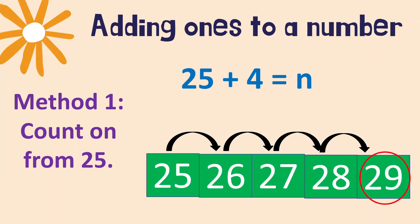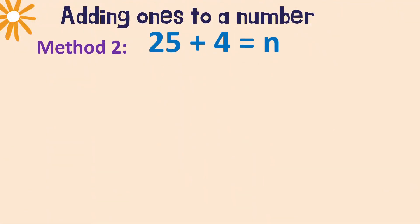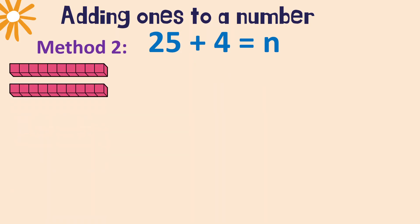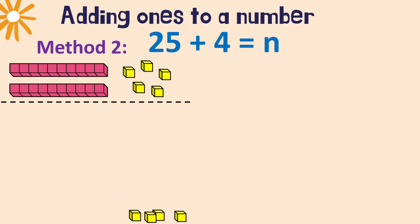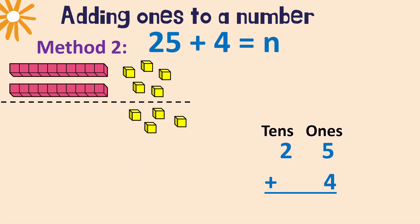29 is the answer when we add 4 to 25. Another method: we can use blocks. Let's represent 25 as two tens and five ones, then we add four ones. We write it vertically and align the digits — ones and tens.